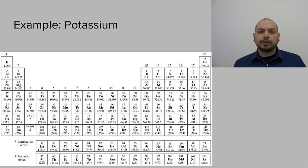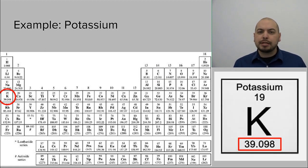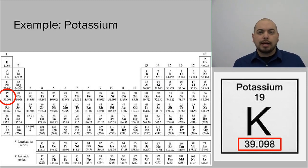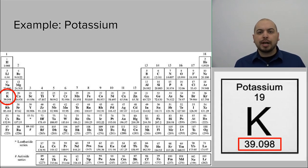So let's look at another example — potassium. Potassium is the 19th element on the periodic table, represented by the letter K. The atomic mass of potassium is 39.098 atomic mass units, or amu.